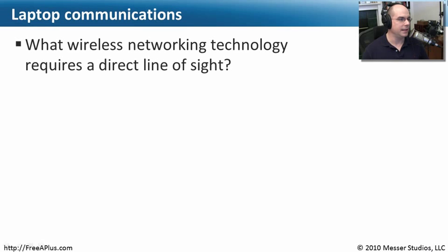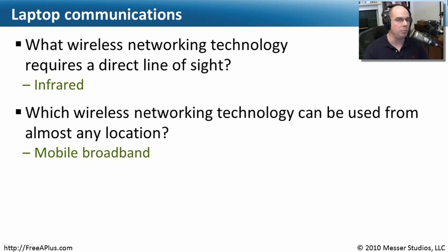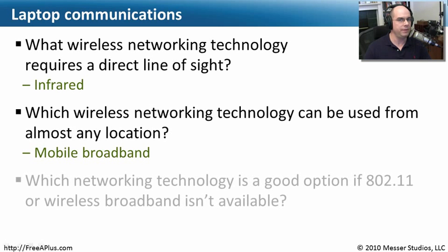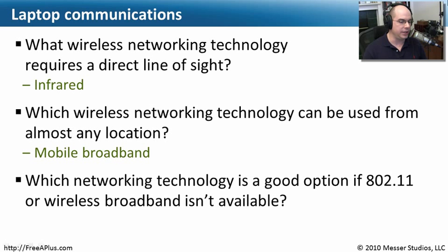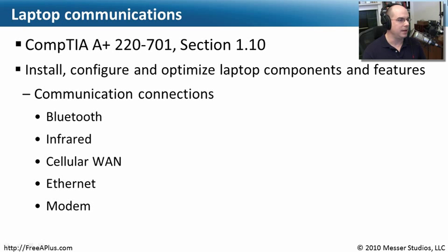Let's review what we've learned about laptop communications. What wireless networking technology requires a direct line of sight? Infrared. Which wireless networking technology can be used from almost any location? Mobile broadband. What networking technology is a good option if 802.11 or wireless broadband isn't available? A modem is really your only option. That covers section 1.10 — Bluetooth, infrared, cellular WAN, Ethernet, and modem technologies.